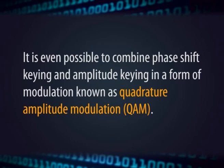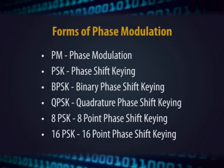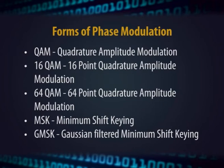It is even possible to combine phase shift keying and amplitude keying in a form of modulation known as quadrature amplitude modulation (QAM). The forms of phase-based modulation include: PM (phase modulation), PSK (phase shift keying), BPSK (binary phase shift keying), QPSK (quadrature phase shift keying), 8PSK (8-point phase shift keying), 16PSK (16-point phase shift keying), QAM (quadrature amplitude modulation), 16QAM, 64QAM, MSK (minimum shift keying), and GMSK (Gaussian filtered minimum shift keying).